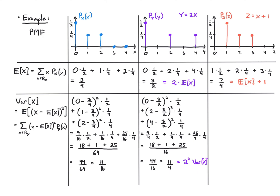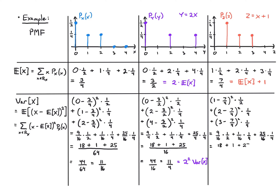Before computing the variance of z, let's think about whether it should be higher than the variance of x. The answer is no — z is just a shifted version of x, and variance doesn't care about shifts. Computing: (1 minus seven fourths) squared times one half, plus (2 minus seven fourths) squared times one fourth, plus (3 minus seven fourths) squared times one fourth. That gives the same result: 44 over 64, or 11 over 16 — exactly equal to the variance of x, confirming the formula.